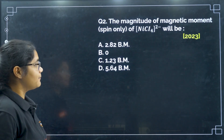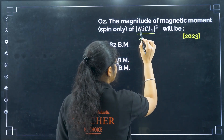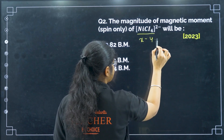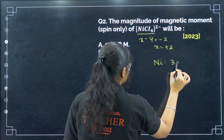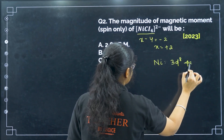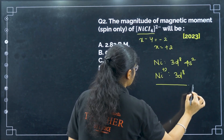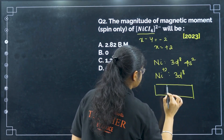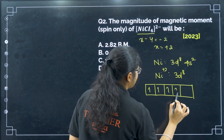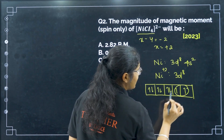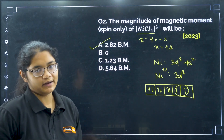Next, the magnitude of the magnetic moment of NiCl4 2− is what? If I find the oxidation state of nickel: x − 4 = −2, so x = +2. The electronic configuration of nickel is 3d8 4s2, and Ni2+ will have 3d8. Drawing the 3d8 configuration gives 1, 2, 3, 4, 5, 6, 7, 8 — so there are two unpaired electrons. For two unpaired electrons, the magnetic moment is 2.82 BM.